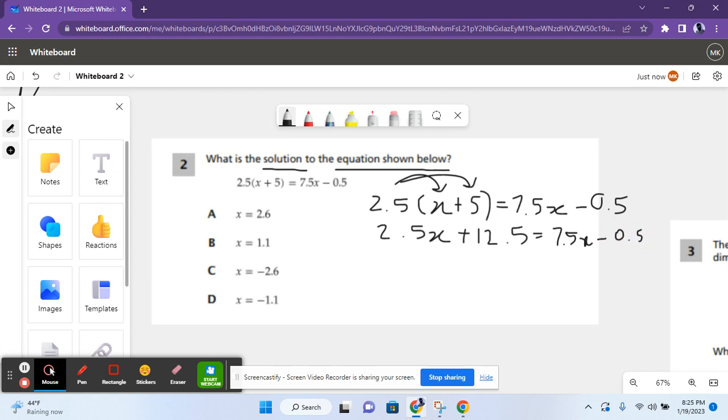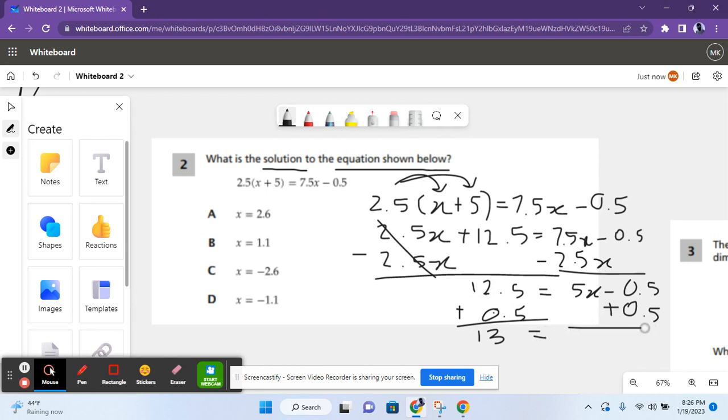After that you have to subtract 2.5x from each side to cancel out the 2.5x. So you got 12.5 equals 5x minus 0.5. After that you have to add 0.5 to each side to cancel out 0.5. So you got 12.5 plus 0.5 which gives you 13 equals 5x. Now divide both sides by 5 and you get 13 out of 5 equals x. 13 out of 5 is also equal to 2.6. So the answer is 2.6 equals x which is answer choice A.